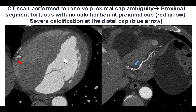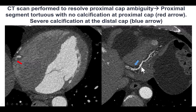Before bringing the patient back, we performed a coronary CT angiogram, which was very useful — first for resolving the proximal cap ambiguity, but also for understanding the distal cap situation, where there was indeed significant calcification, explaining the difficulty we had penetrating through the distal cap.